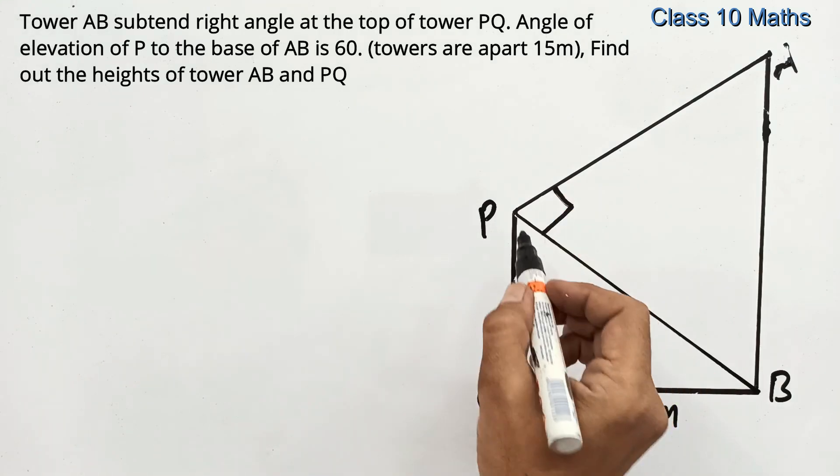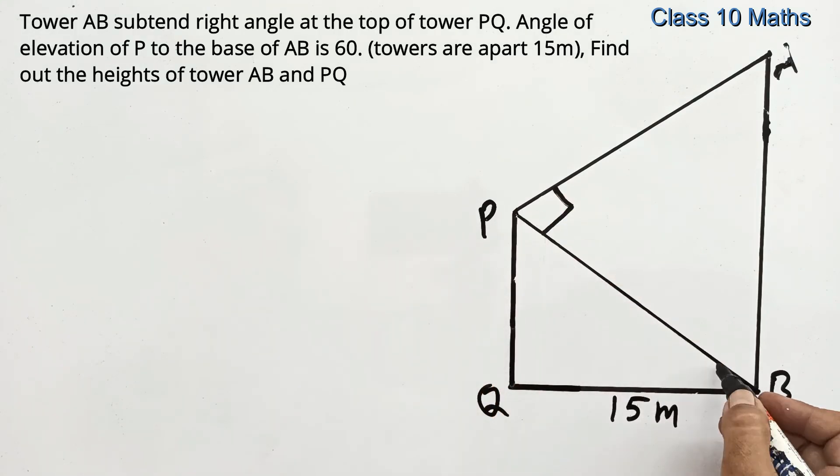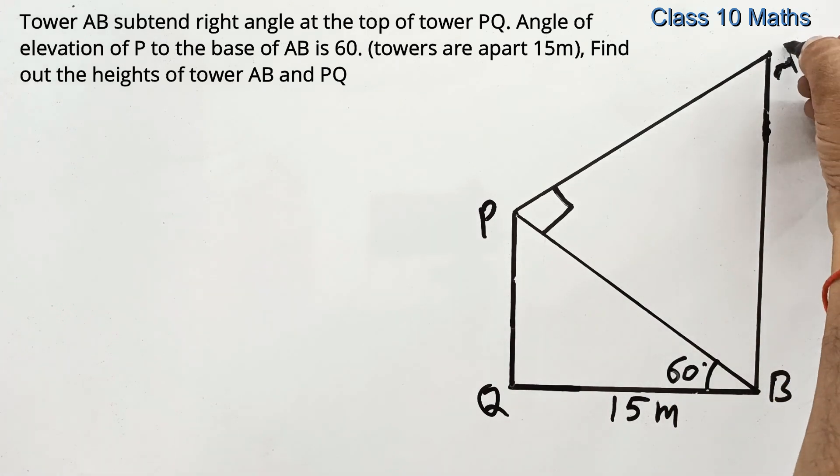And also given that angle of elevation of top of this tower to the base of tower AB is 60 degrees. We need to find out AB and PQ.